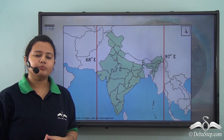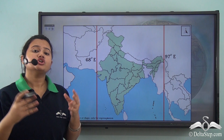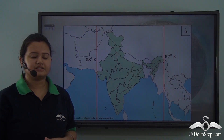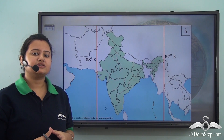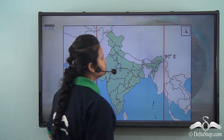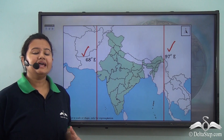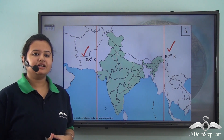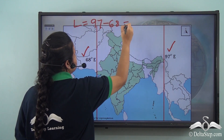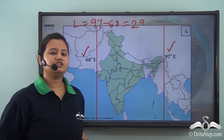Now just like Kolkata and Mumbai, if all places in a country follow their own local time, then it will be too inconvenient for a country like India which has a large longitudinal extent. This map shows the longitudinal extent of India — the country extends from 68 degrees east longitude to 97 degrees east longitude. The number of longitudes that pass through this country is 97 minus 68, which is equal to 29.